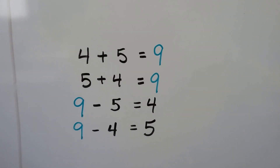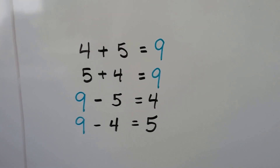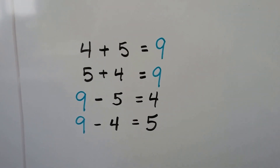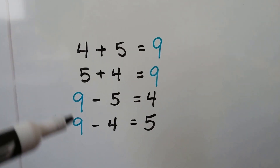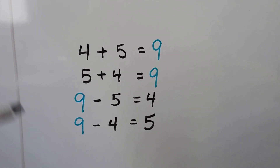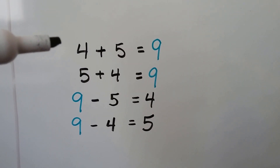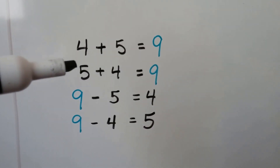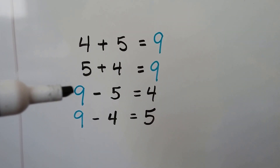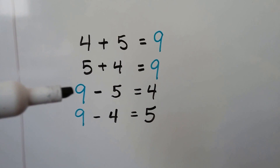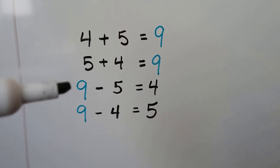Here's another fact family. We have 4, 5, and 9. We have 2 addition sentences and 2 subtraction sentences. 4 plus 5 equals 9. 5 plus 4 equals 9. The sum 9 becomes the minuend for the subtraction sentence. 9 minus 5 equals 4.